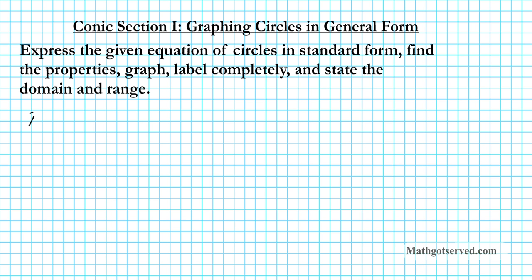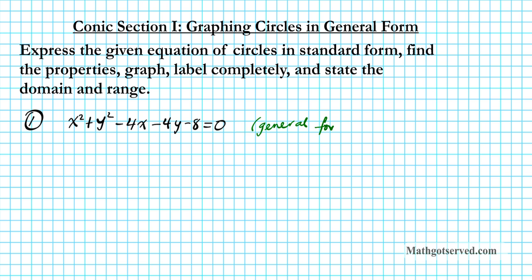For question number one, we have a circle: x squared plus y squared minus 4x minus 4y minus 8 equals zero. If you look at this equation, we can tell that it's a circle because the coefficients of the squares are the same. We have a plus between the squares and then we have two squares — two squares, the same coefficient, and a plus tells us that this is the equation of a circle. This is known as the general form of the equation of a circle.